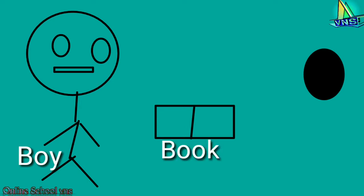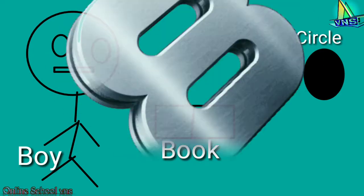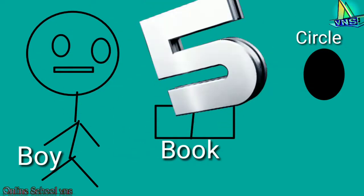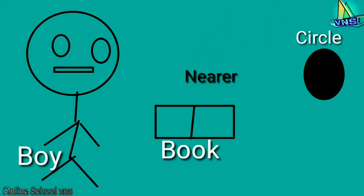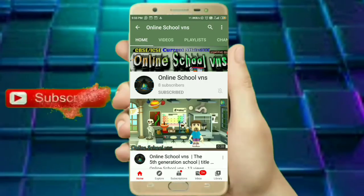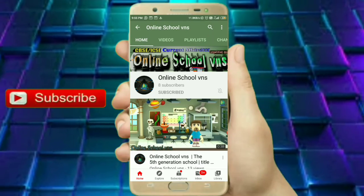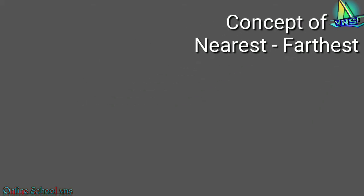Now it is your time to tell me: in this diagram there is a boy on the left-hand side, a book in the middle, and a circle on the right-hand side. Which is nearer to the boy — the book or the circle? And which is farther to the boy — the book or the circle? I know the diagram is not so attractive, but focus on the topic. Your countdown starts now — you have only 10 seconds. The right answer is that the book is nearer and the circle is farther.